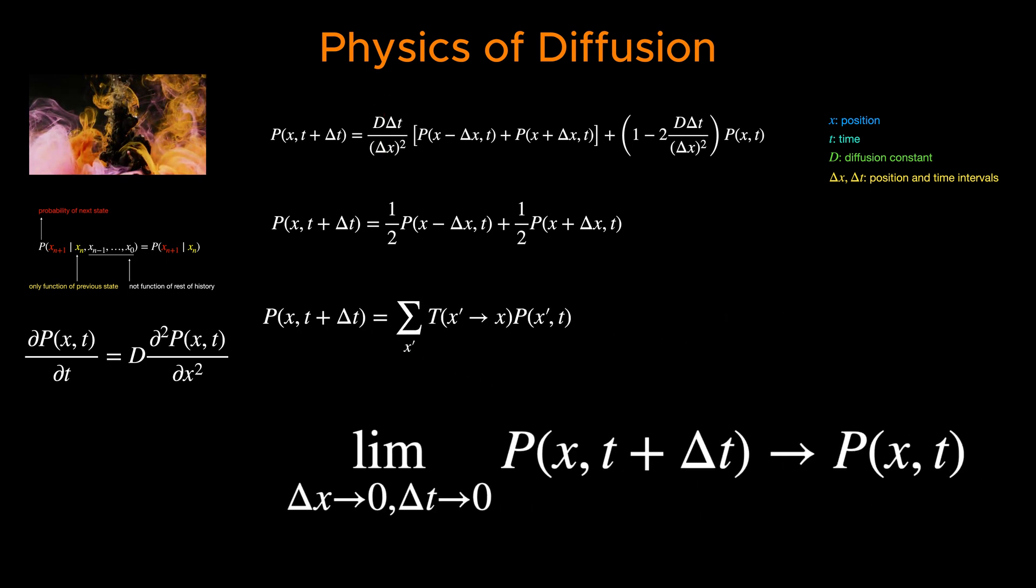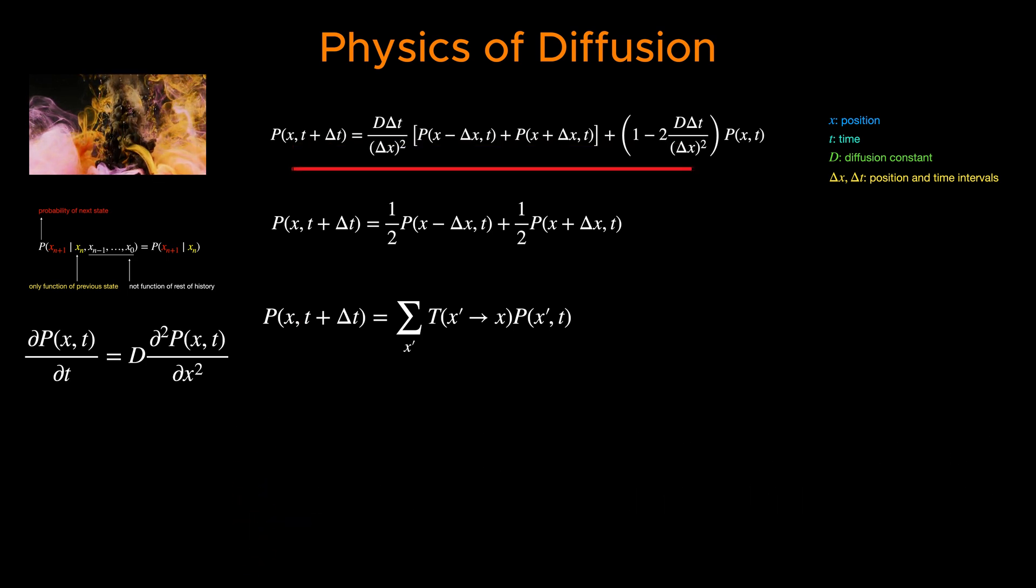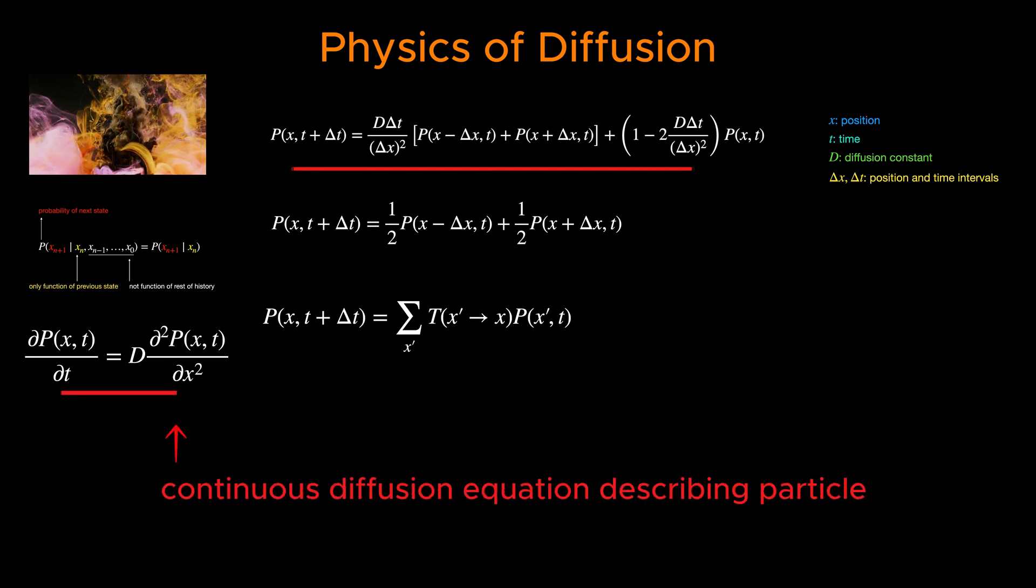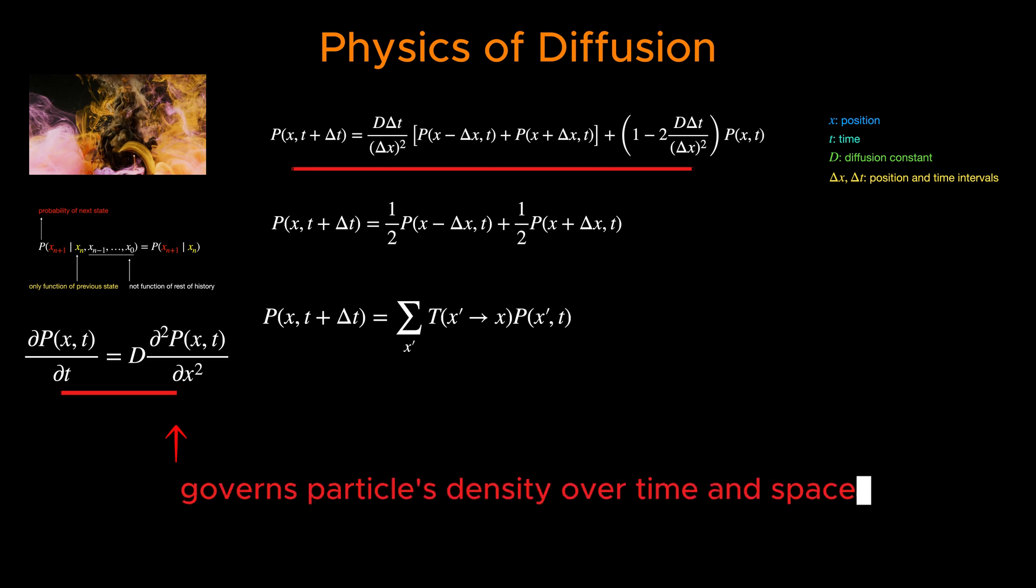As the number of steps becomes very large, and the step size becomes very small, the discrete Markov process transitions into a continuous diffusion process described by the diffusion equation, a partial differential equation that governs the distribution of particle density over time and space.